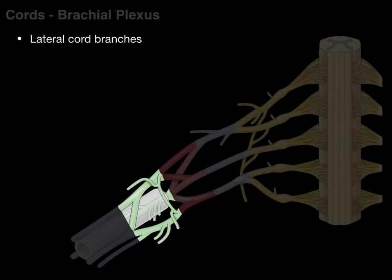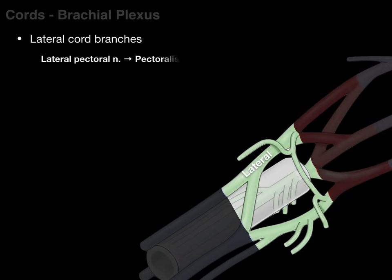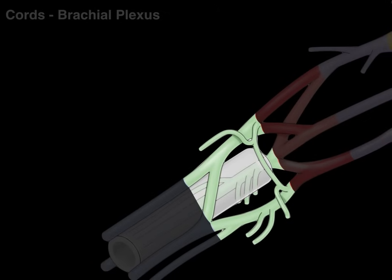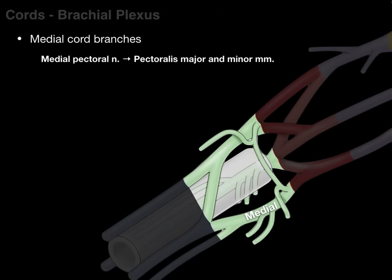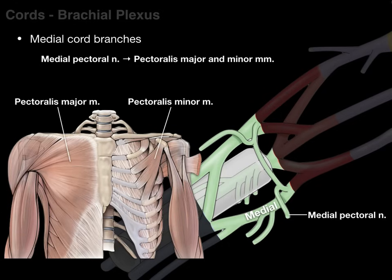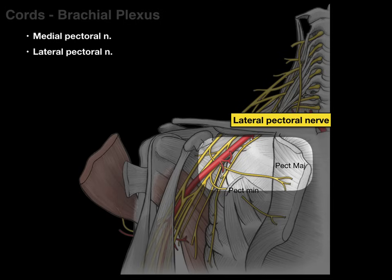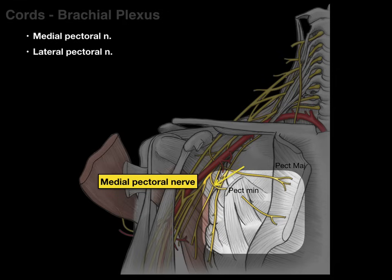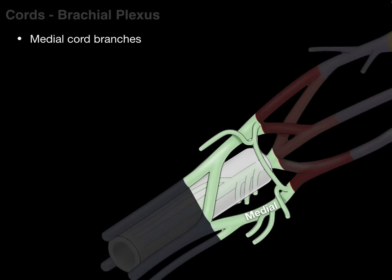Some branches that come off the cords: the lateral cord gives rise to the lateral pectoral nerve that innervates our pectoralis major. The medial cord has the medial pectoral nerve as one of its branches, innervating both the pec major and pec minor. The lateral pectoral nerve courses out and innervates our pec major, and the medial pectoral nerve pierces and innervates our pec minor and continues out to the pectoralis major. Even though the medial pectoral nerve looks lateral, these two nerves are named by their origin on the cords of the brachial plexus.